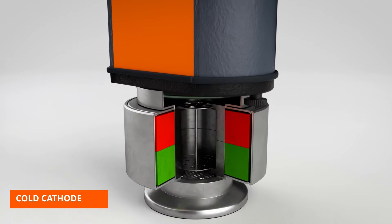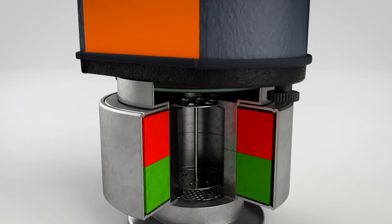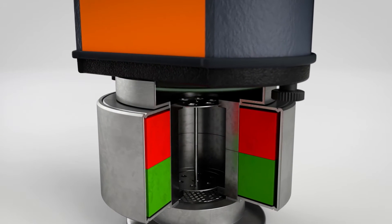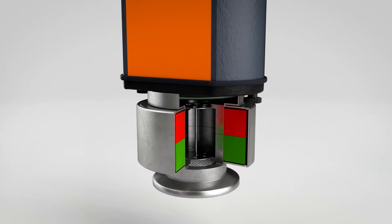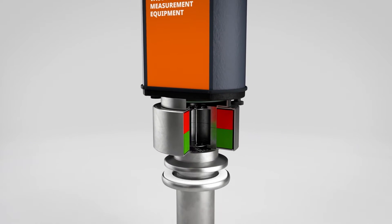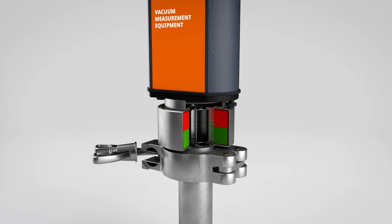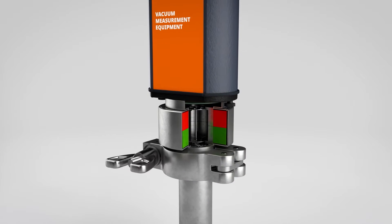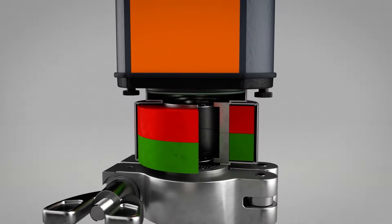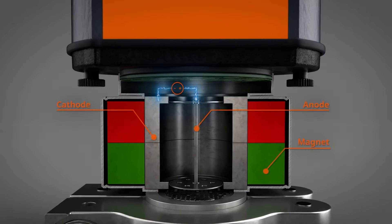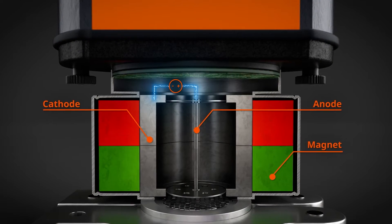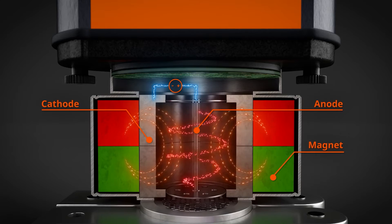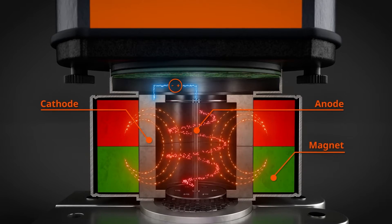A cold cathode gauge determines the pressure by measuring the ionization current caused by gas ions that collide with a low temperature cathode. The gauge consists of a cylindrical chamber surrounded by a magnet. Also present are two electrodes: the anode in the center of the chamber and the negatively charged cathode, which shields the magnet from the cylindrical chamber.